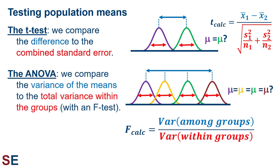With the ANOVA, we use the same basic concept as the t-test, comparing the overall variation in the means of the groups to the variation we would expect if it was caused only by whatever causes the variation within the groups. For the ANOVA, we measure the variations using variances instead of pure differences in means or standard errors, and then we compare these using an F-test. The F-calculated value divides the variance among the groups by the variance within the groups. The bigger the F-calculated value, the more likely it is that the population means differ.